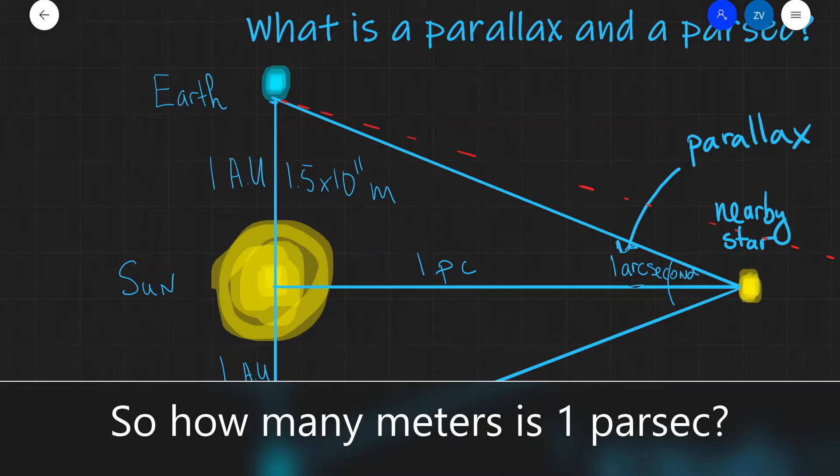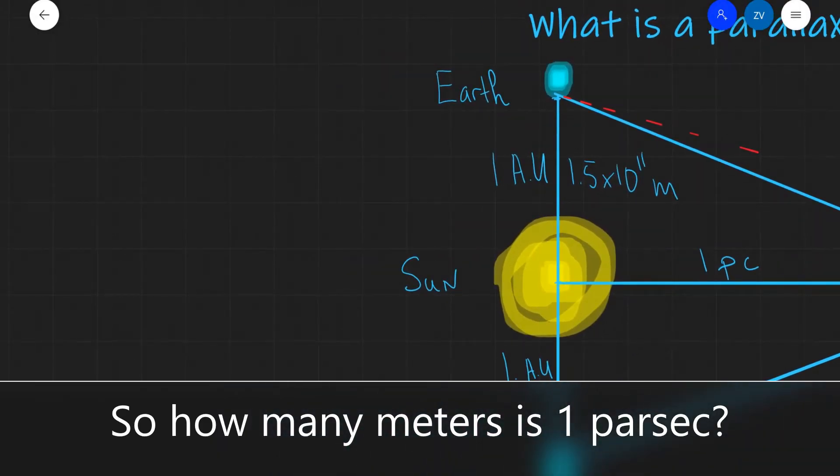Let's calculate the value of one parsec in meters. In order to do so, we need to use just simple trigonometry. Notice that we have the parallax angle, which is one arc second. And we know that the opposite is one astronomical unit, which is 1.5 times 10 to the power of 11 meters. And the adjacent to this angle is one parsec. So, now, let's just write this down.